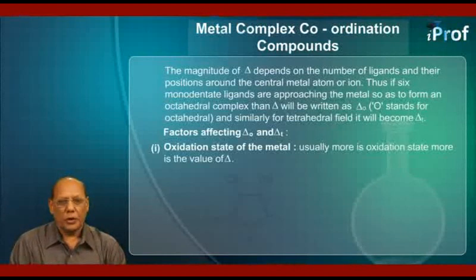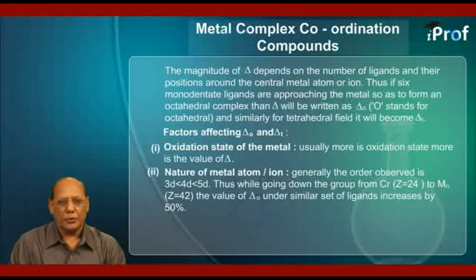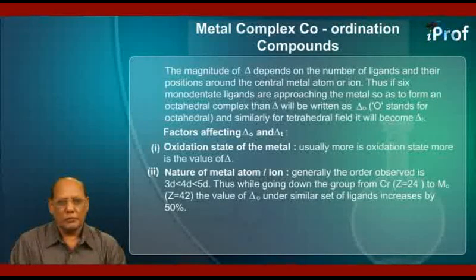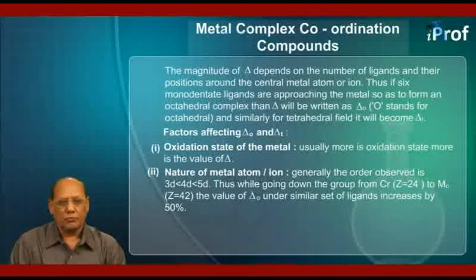Second, nature of metal atom or ion. Generally, the order observed is 3D less than 4D less than 5D. Thus, while going down the group from chromium (atomic number 24) to molybdenum (atomic number 42), the value of delta O under a similar set of ligands increases by 50%.